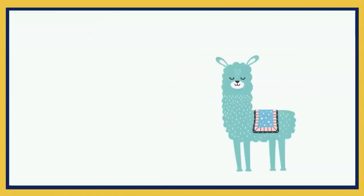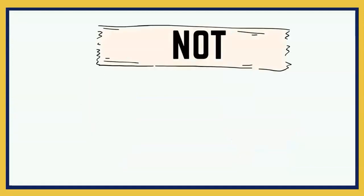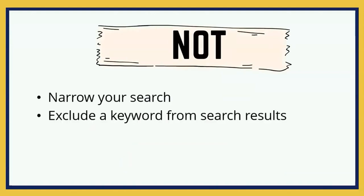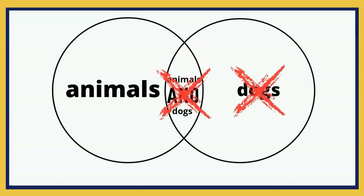Although dogs are common therapy animals, did you know that llamas, rabbits, and other uncommon pets can be registered as therapy animals? If you'd like to exclude dog from your search in order to find these other unique therapy animals, you could use the NOT operator. This operator will narrow your search and exclude a word from your search results. By searching for animals, not dog, the database will exclude all documents containing dog from your search.